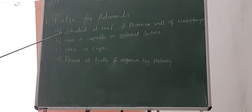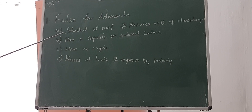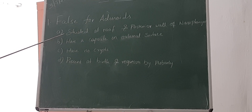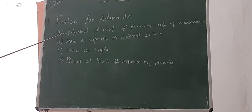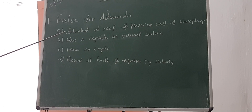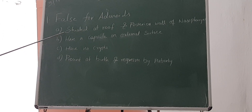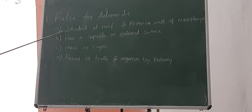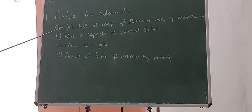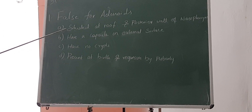It is situated at the roof and posterior wall of the nasopharynx. Is it situated at the roof and posterior wall of the nasopharynx? Yes. Roof and the posterior wall of the nasopharynx — in front of which vertebra? C1, the first cervical vertebra.